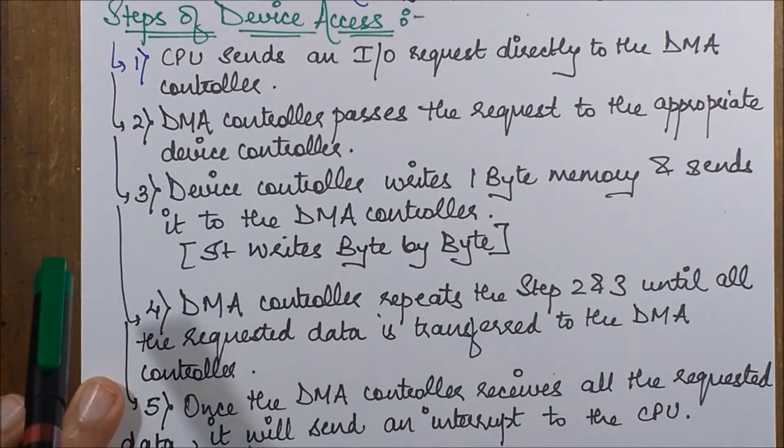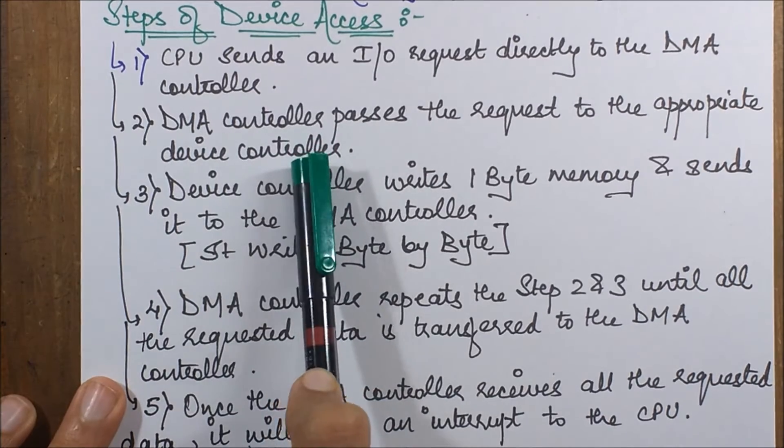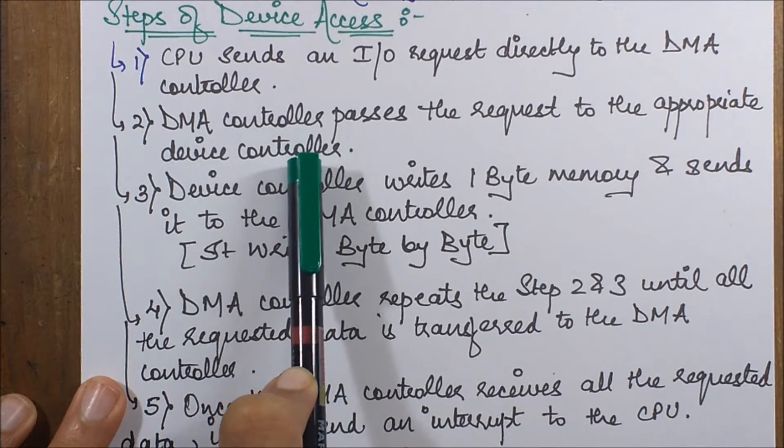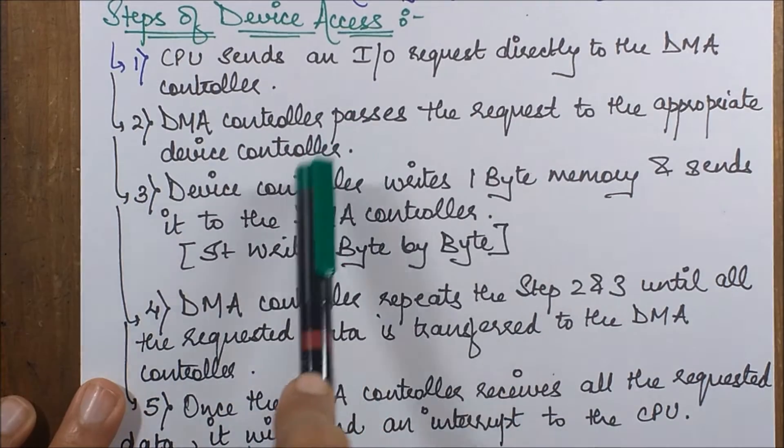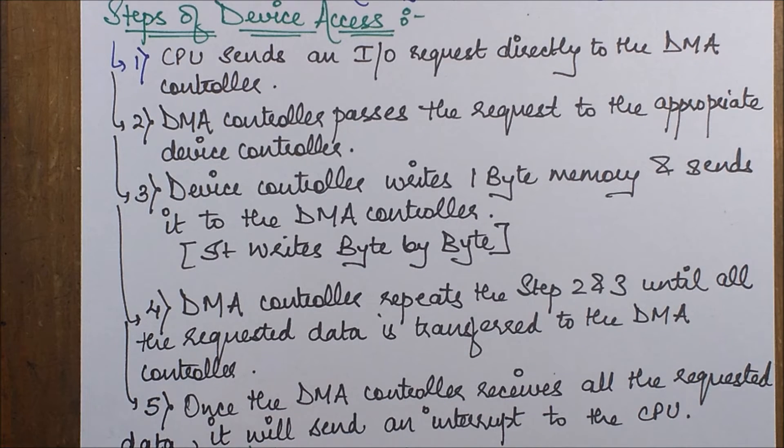The CPU is interacting with your DMA. The DMA then forwards this request to the particular device controller. You can notice that it has not interacted directly with the device, it is interacting with a particular device controller.